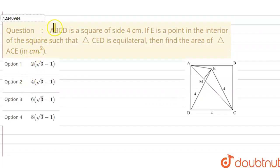Hello friends, what do we need to do with this question? ABCD is a square of side 4 cm. If E is a point in the interior of the square such that triangle CED is equilateral, then find the area of triangle ACE in cm².